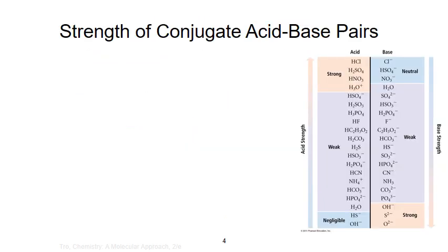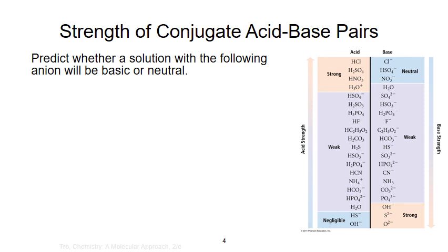This table shows the relationship between the strength of an acid and its conjugate base. We can use the table to help predict whether a solution containing a specific anion will be basic or neutral.